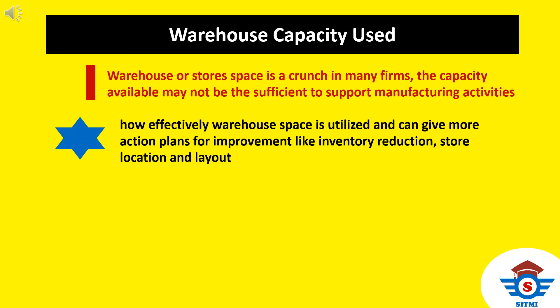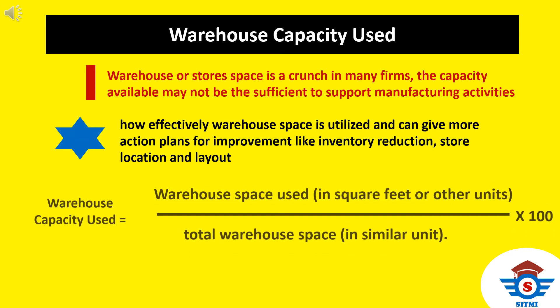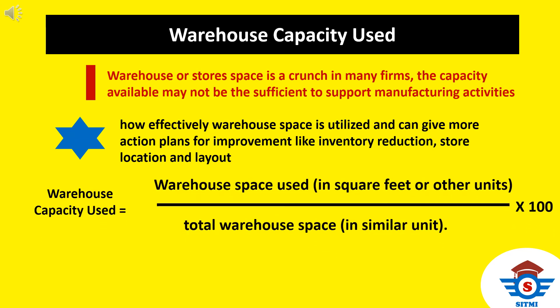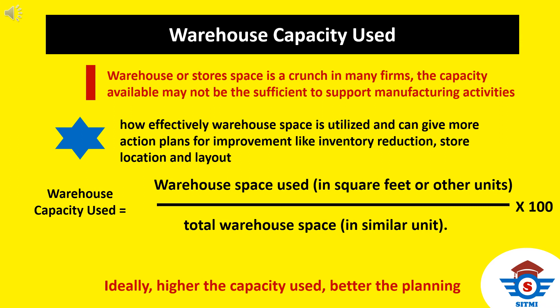The indicator is measured as a percentage — the ratio of warehouse space used (in square feet or any other unit) divided by total warehouse space in similar units. In an ideal situation, higher the warehouse capacity used, the better the planning and the better the resources are utilized.